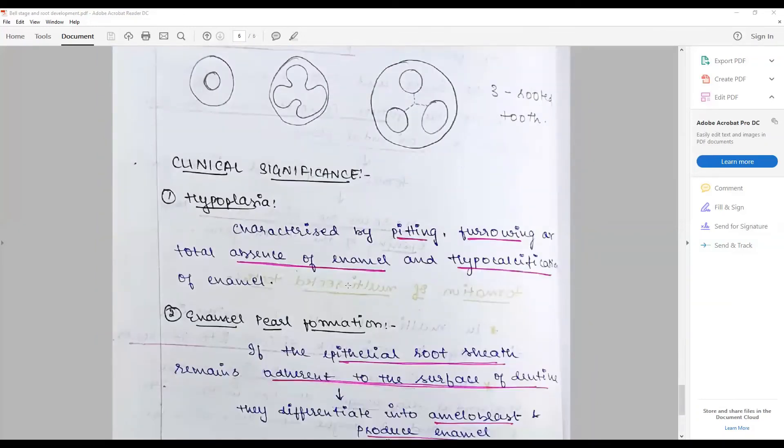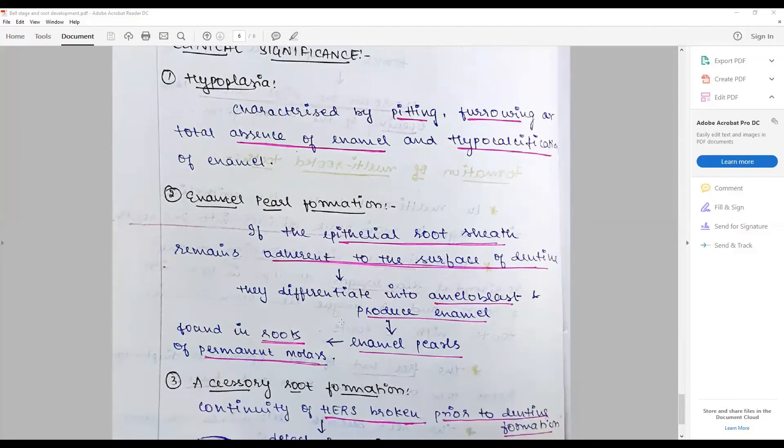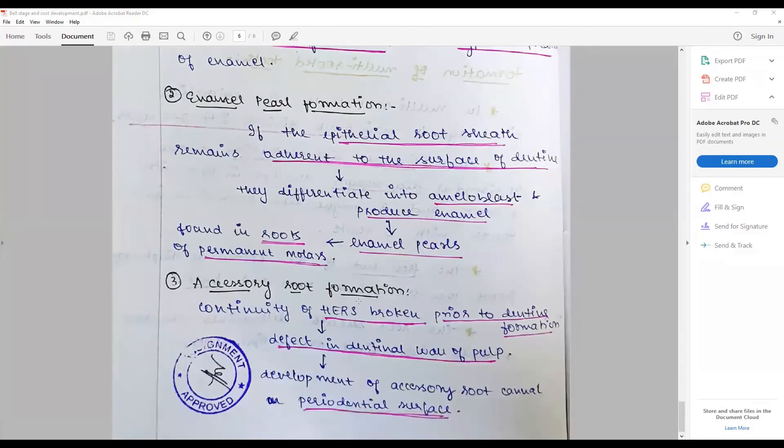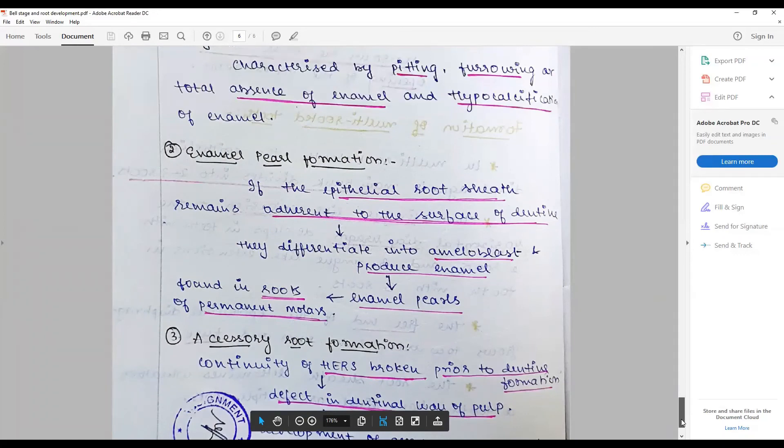Coming to the most important thing, the clinical significance: talk about hypoplasia, where there is decreased amount of ameloblasts causing pitting or furrowing, or total absence of enamel and subsequent hypocalcification of enamel. Enamel pearl formation - if the epithelial root sheath remains adherent to the surface of dentin and does not cause opening up, thereby producing ameloblasts in excess, that is called enamel pearls persisting in root. Accessory root formation - because of the HERS broken more than twice or thrice, leading to accessory root canal formation. These are the clinical significances that are associated with the bell stage as well as development of root.